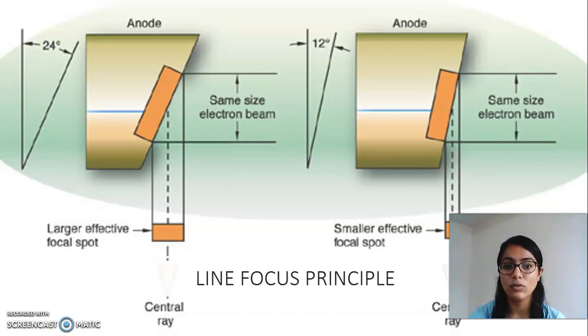The size and shape of the electron stream is determined by the dimension of the tungsten filament, position of the focusing cup, position of the filament in the focusing cup and etc.